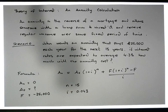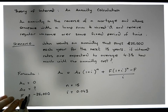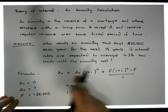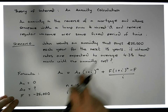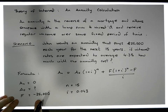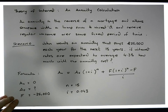This is actually really important: we're withdrawing from this account €25,000 each year for 15 years. F is going to be negative to indicate that we're withdrawing and not actually putting something in — we're not investing into the account.